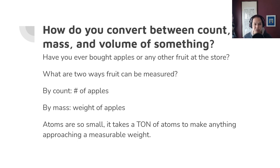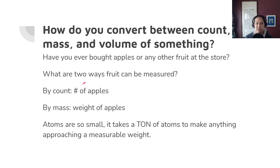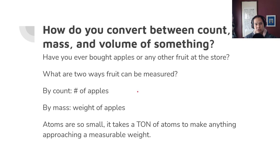Atoms are very tiny — so small that it takes a ton of atoms to make anything approaching a measurable weight. That's why we need to use this concept of counting the number of atoms and mass, and converting between the two to get numbers that are useful when doing calculations in the real world. We'll come back to atoms, but let's start with simpler examples first.